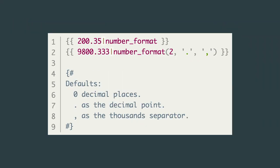Regarding filters that receive parameters — some parameters are optional, so if you don't define them you get defaults. For example, the number_format filter can receive three parameters: the first defines how many decimal places, the second is the decimal point separator, and the third is the thousand separator. If you don't define anything, you get just '200', but with parameters you can get something like '9,800.33'.